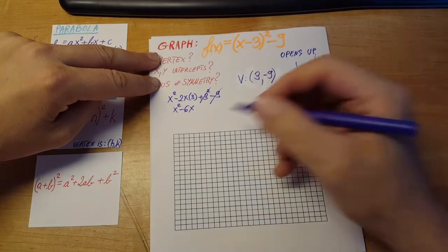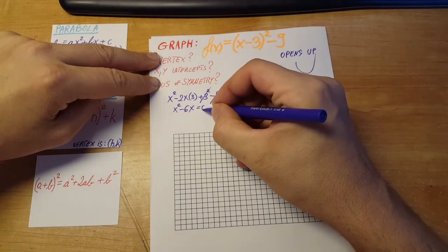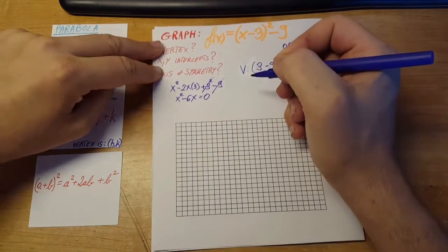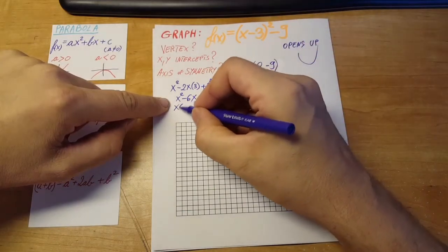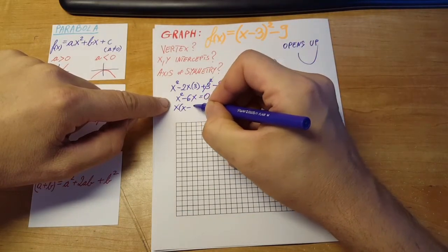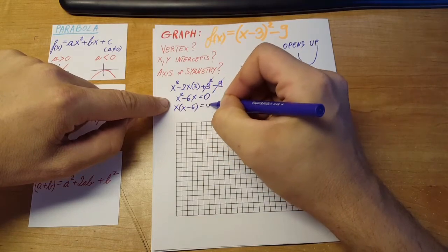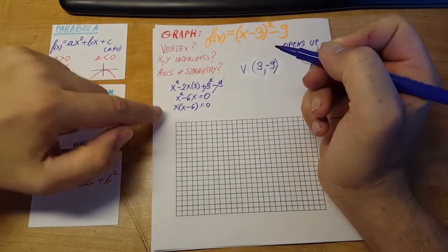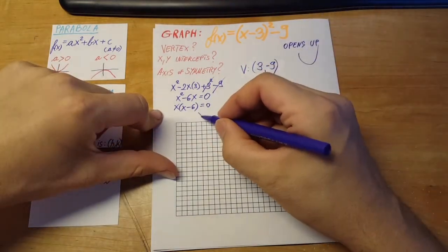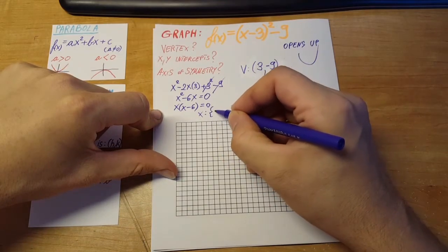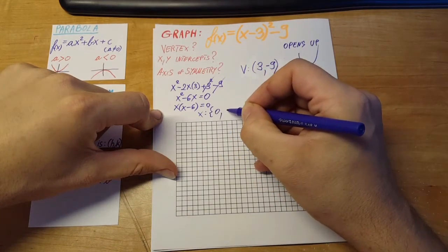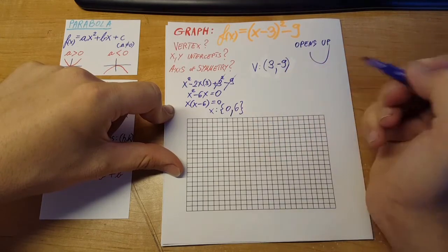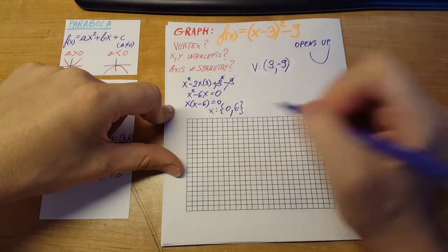In order to find the intercept, we'll put it equal to 0. We'll factor it. x times x minus 6 equals 0. From here, very easy to see, x-intercepts will be 0 and 6. Those are our two x-intercepts.